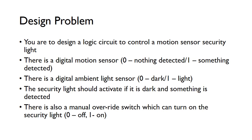There's a digital motion sensor — this is the thing that actually detects movement in the garden. It will output a zero when nothing is detected, or a one when something is detected. There's also a digital ambient light sensor, because we only want the light to come on in the evening when it's dark. The light sensor will output a zero when it's dark, and a one when it's light.